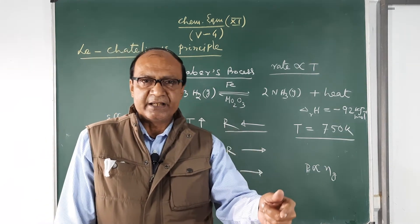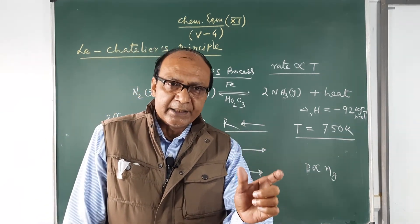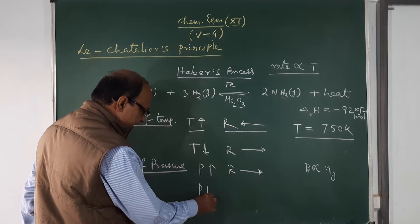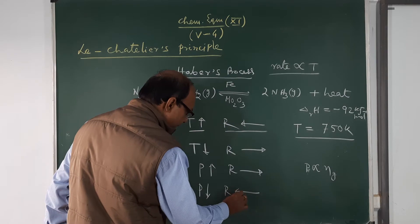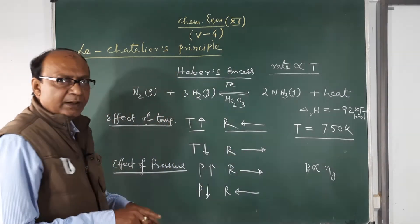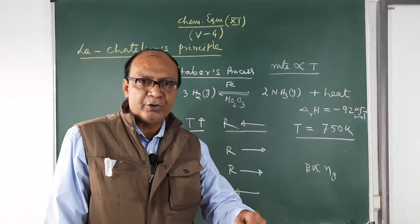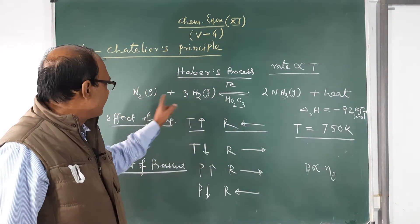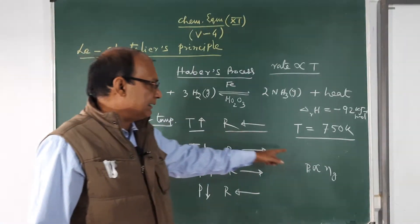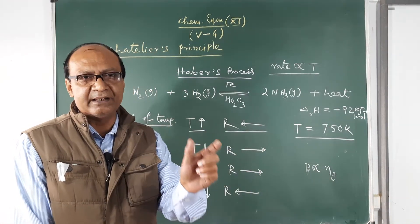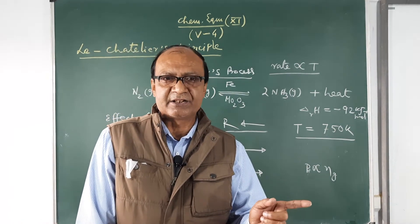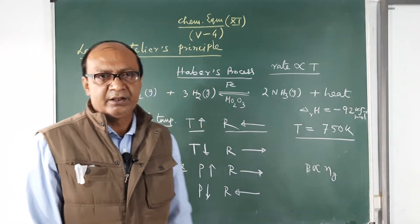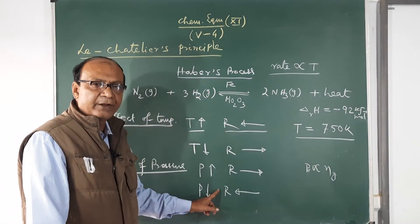High pressure favors the forward direction; more ammonia can be synthesized under high pressure. If pressure is decreased, the reaction favors the backward direction — the system tries to produce more moles (3+1=4 moles on the reactant side) to increase pressure. So decreasing pressure moves equilibrium backward, and increasing pressure moves it forward. This is how you can explain the effect of pressure.